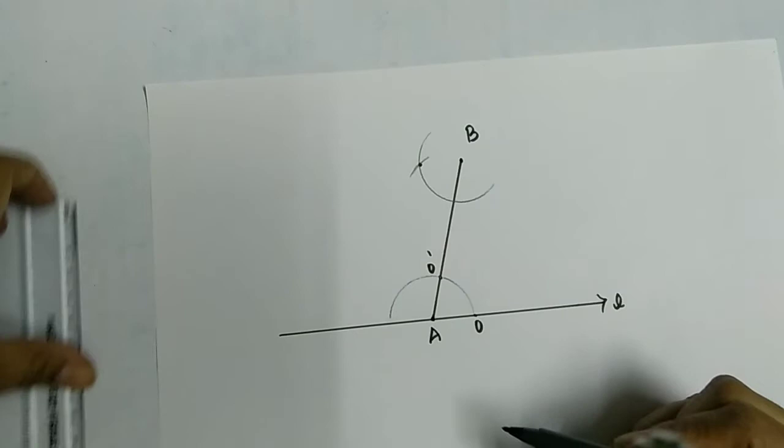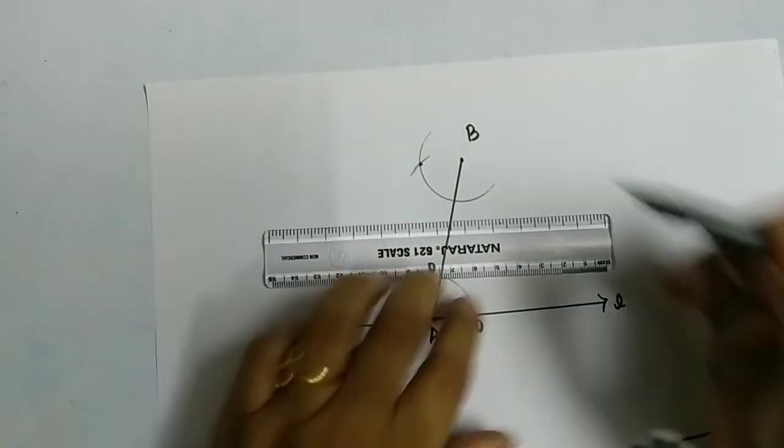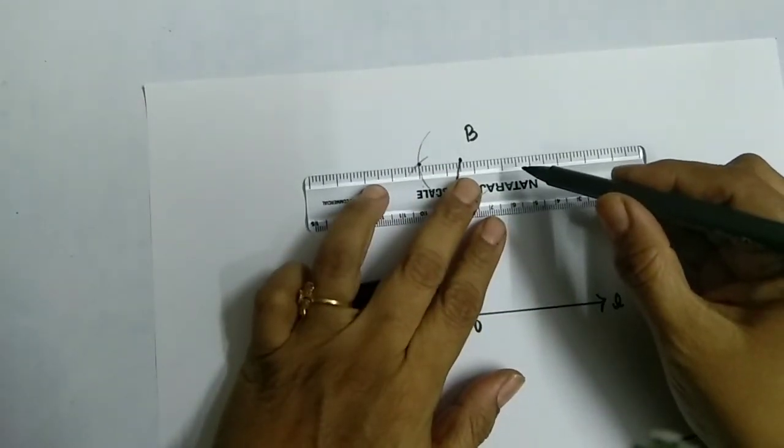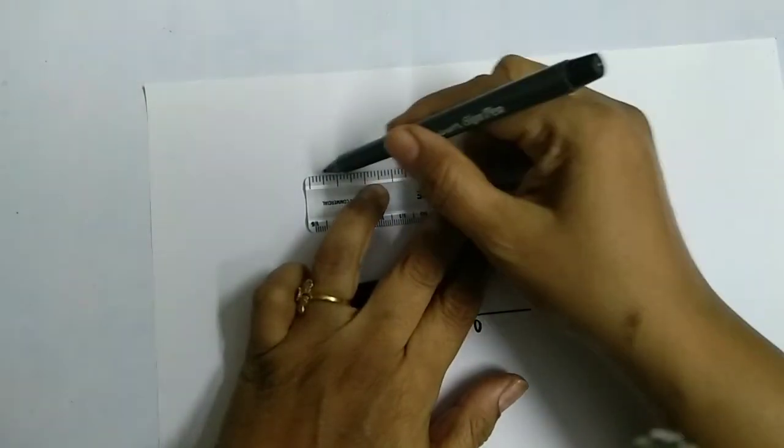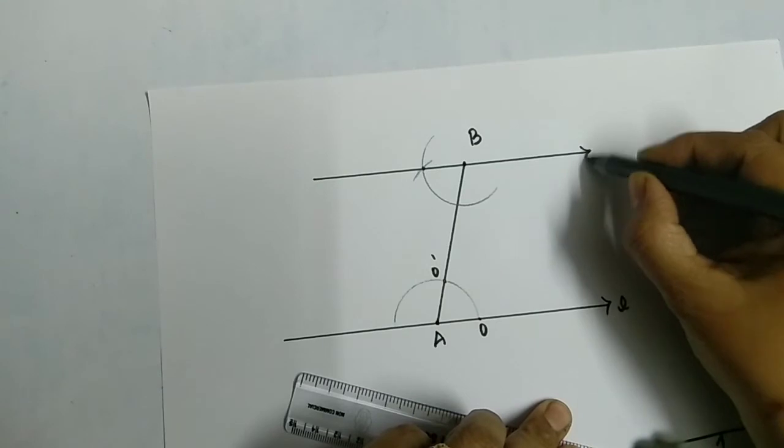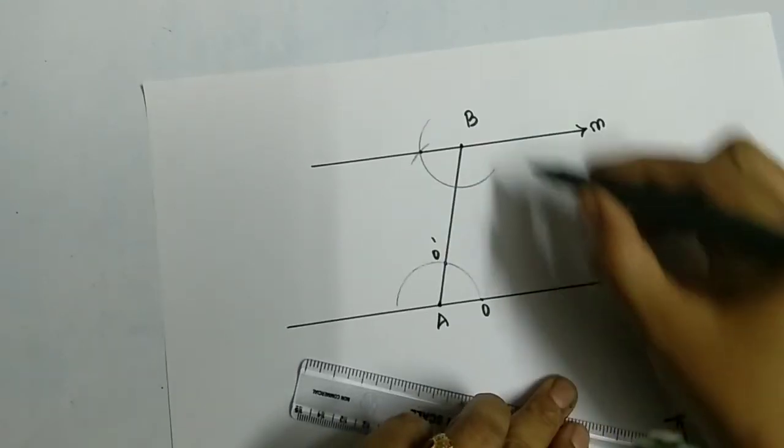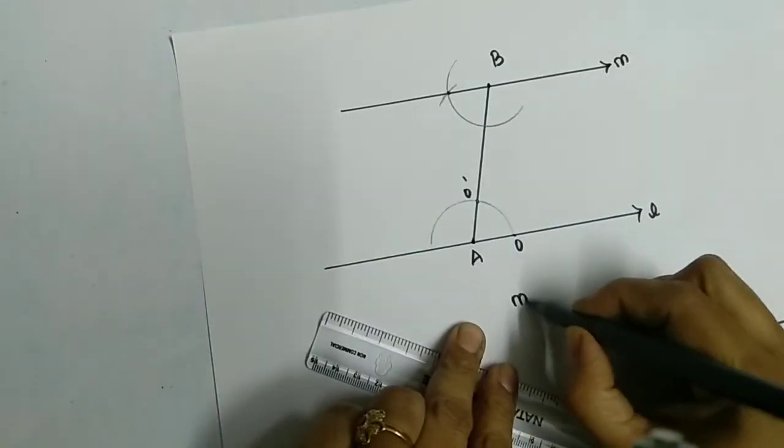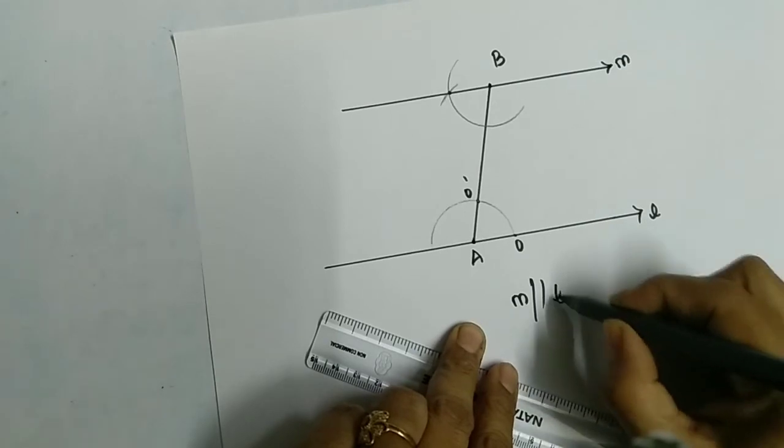If you take a scale and join these points and draw a straight line, here we get line m. This line m is parallel to line l. This is about the construction.